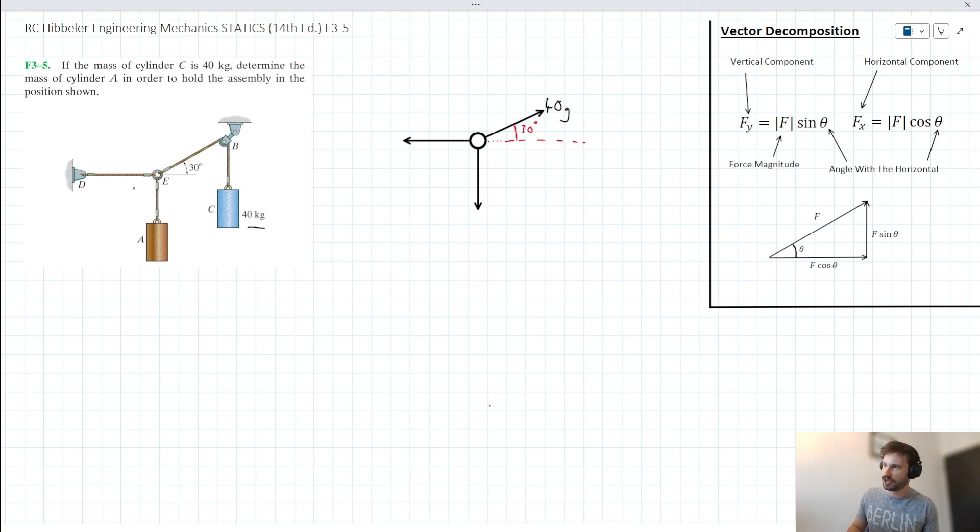We have tension in rope ED - let's call it T for tension. And we have the mass of cylinder A, which we're looking for. Let's call it M subscript A times G, where M subscript A is the mass of cylinder A.